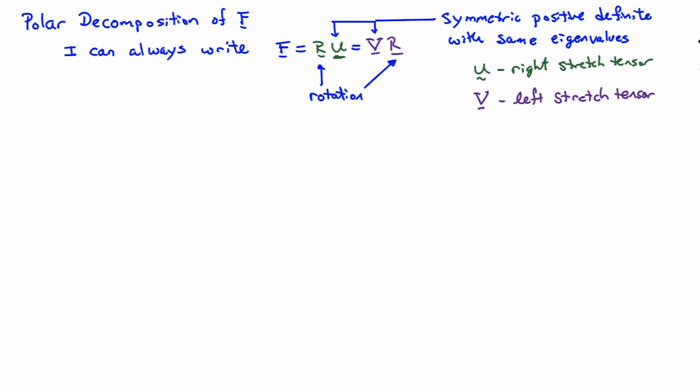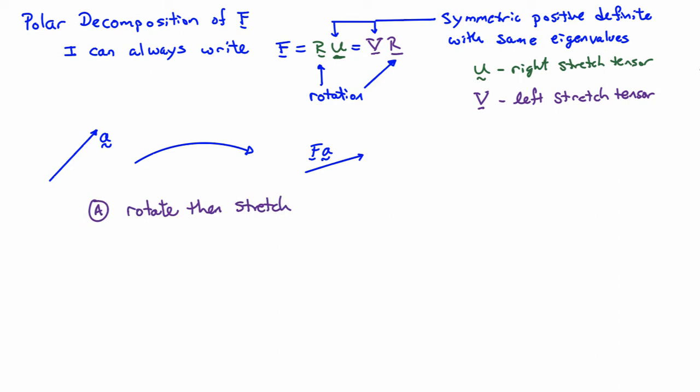What this decomposition tells me is that I can think about what happens when I have an infinitesimal vector and it's mapped from the undeformed configuration to the deformed configuration, so A goes to FA. The decomposition tells me there are two ways to think about it: I can think about first rotating the vector A and then stretching it with V, or I can think of first stretching the vector with U and then rotating it with that same rotation R.